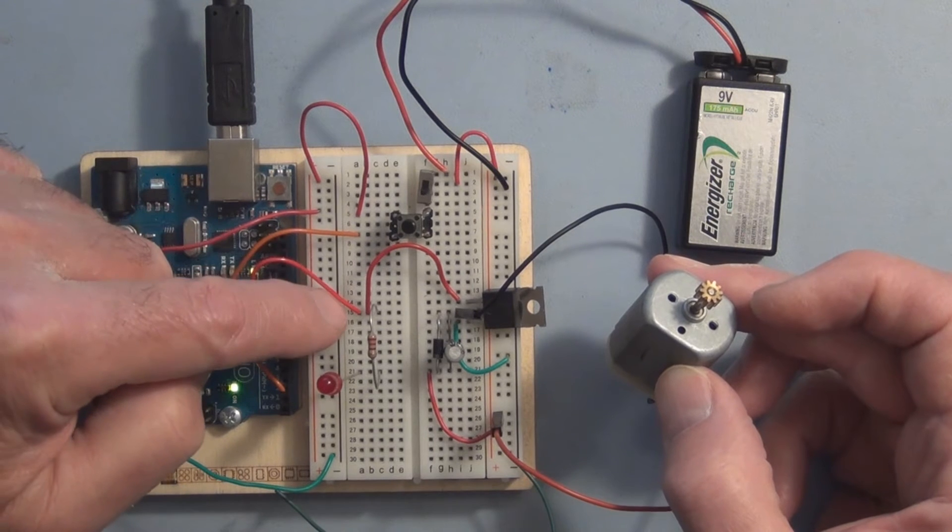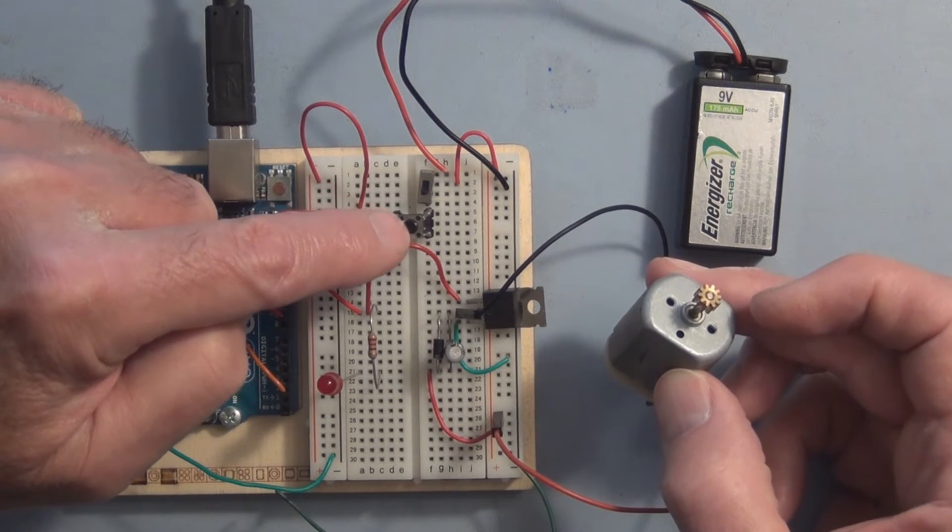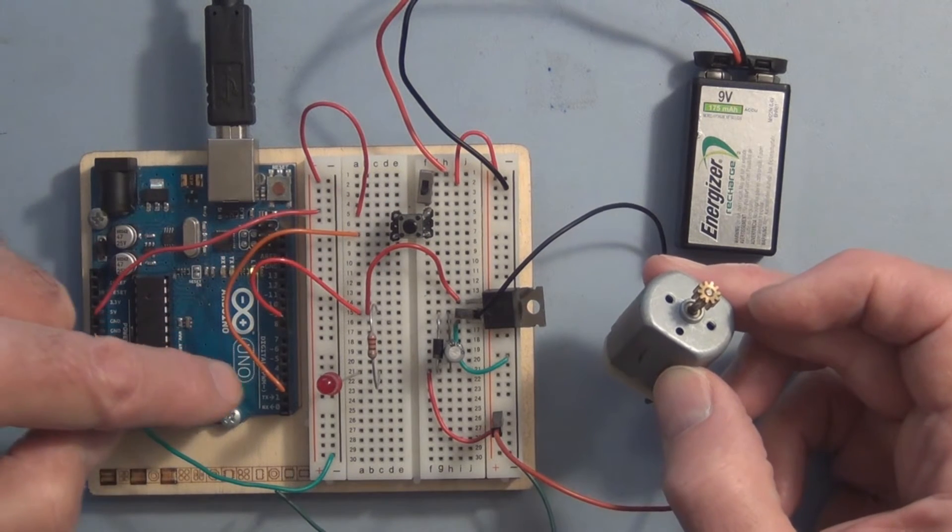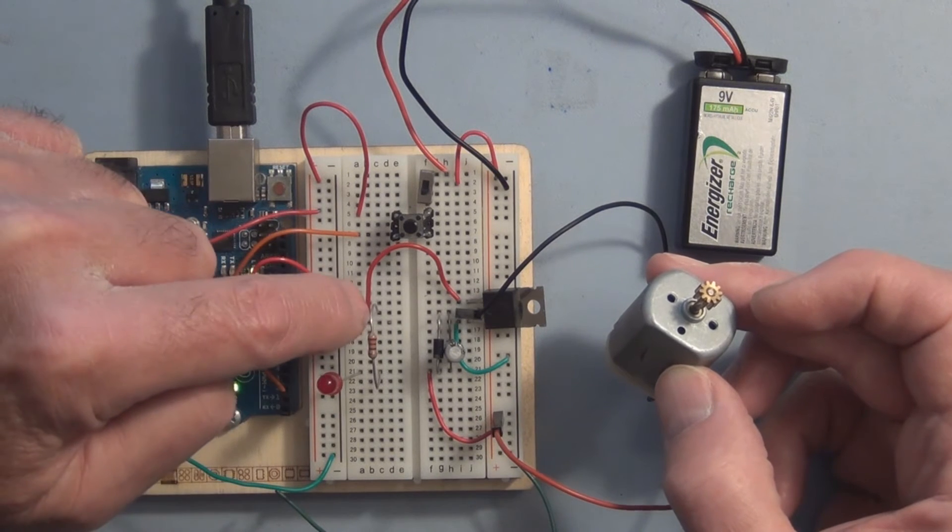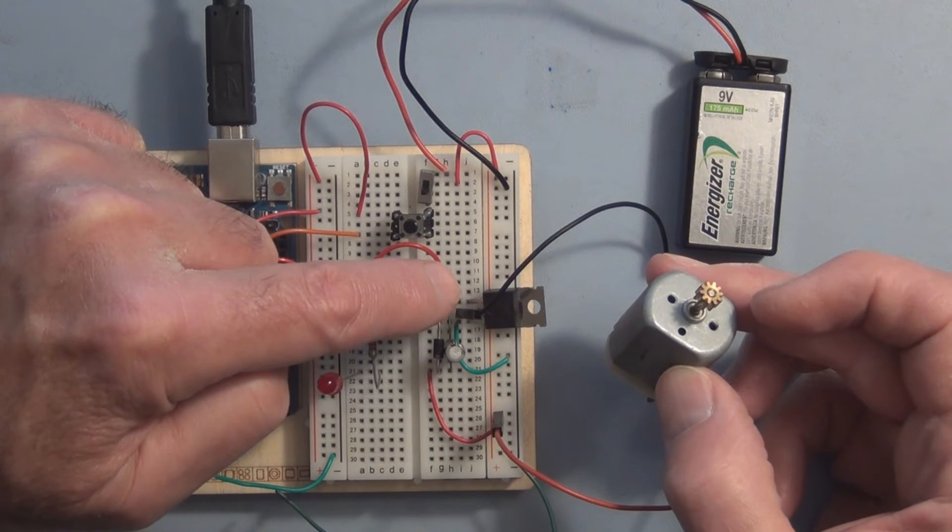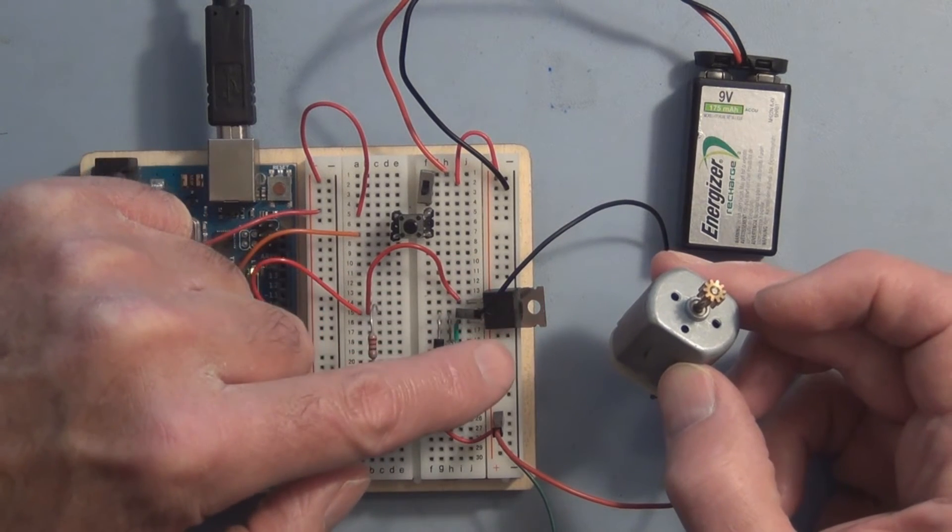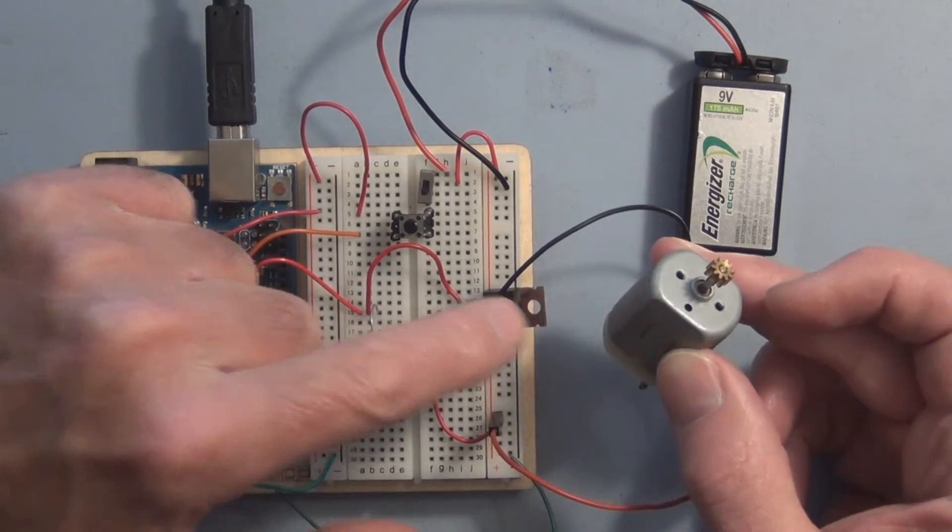So when pin 9 goes high in response to the detection of this switch applying 5 volts to pin 2, it'll light up. And that's the same bias that you apply to the gate, which if your MOSFET circuit is wired correctly should turn on the motor.